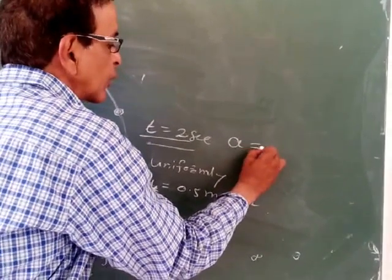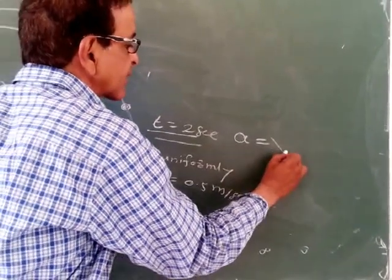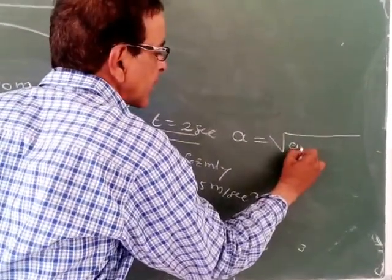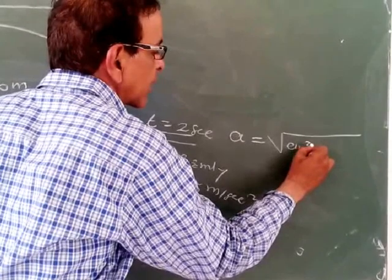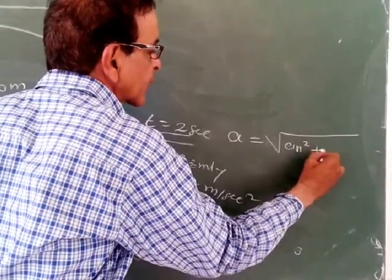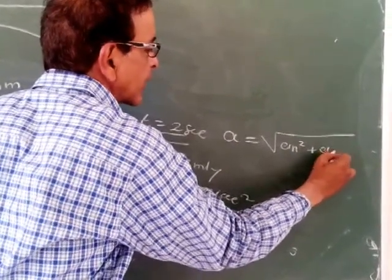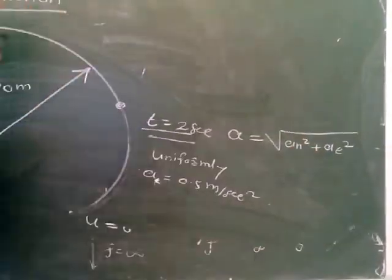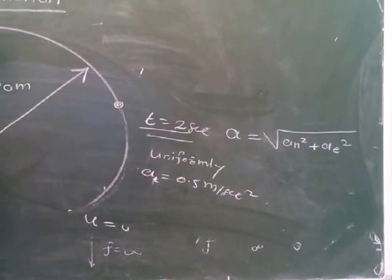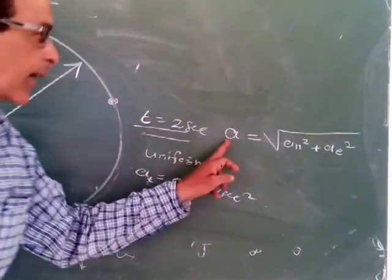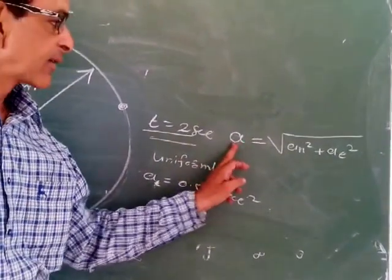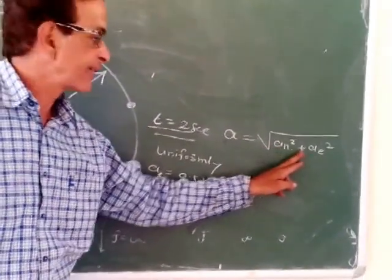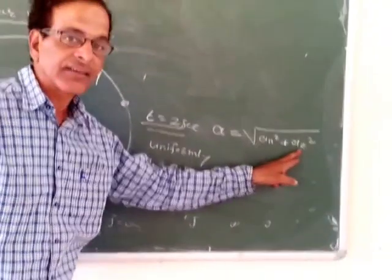The total acceleration is equal to the square root of Aₙ² plus Aₜ², where Aₙ is the normal component of acceleration and Aₜ is the tangential acceleration.